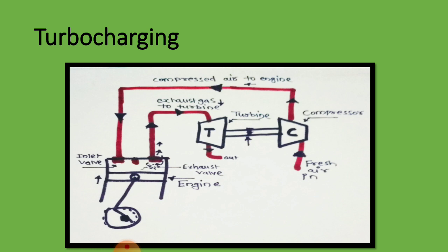That mechanical energy is used to run the compressor. In this way the compressor starts running, and it takes in fresh air from the atmosphere, compresses it, and provides it to the engine — same as in a supercharger. The difference is that in turbocharging we use a turbine, and the turbine is rotated by the exhaust gas.